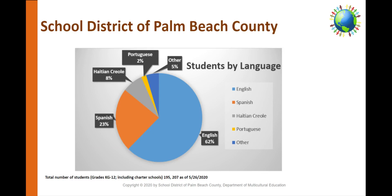Here's interesting data from the School District of Palm Beach County. Notice these are the percentages of students by language. The top four languages being spoken in our district are English, Spanish, Haitian Creole, and Portuguese. That is 38% of our students being bilingual and bicultural.